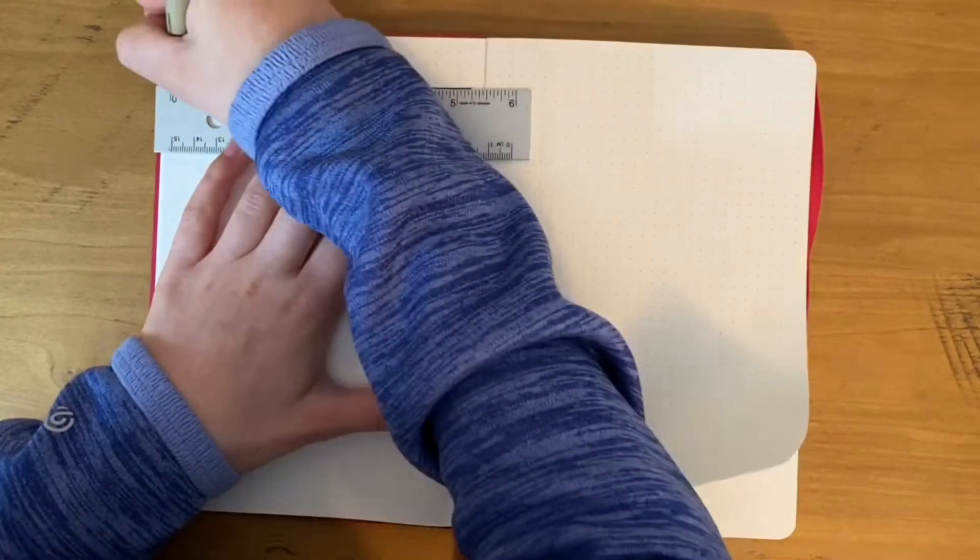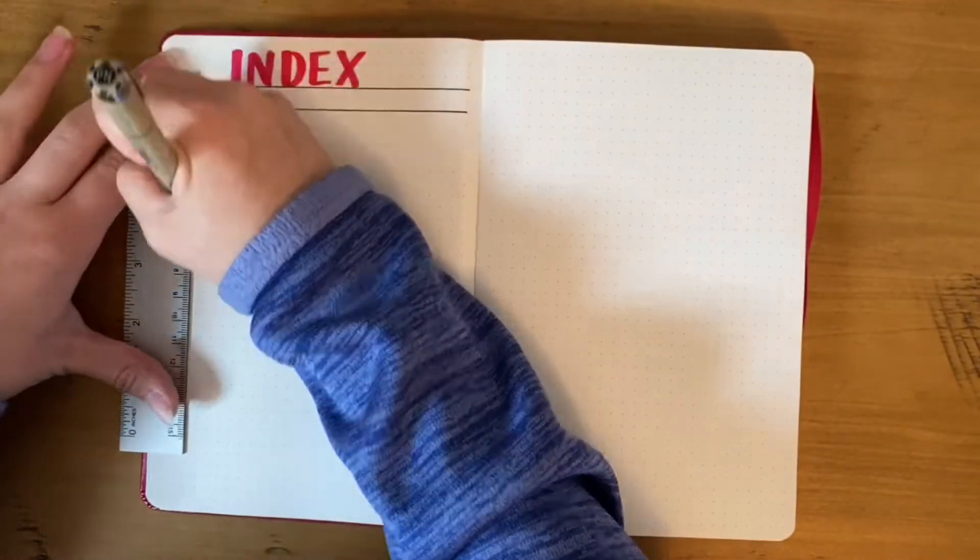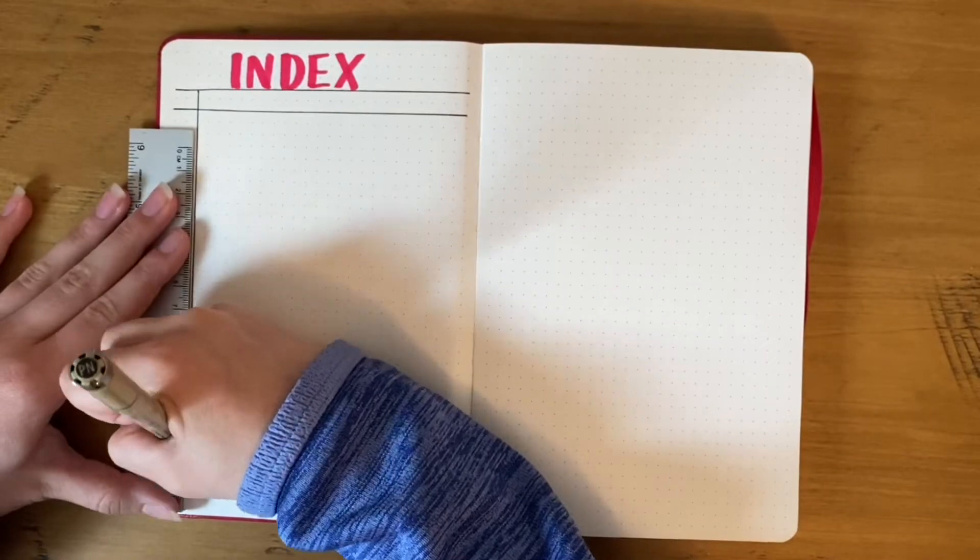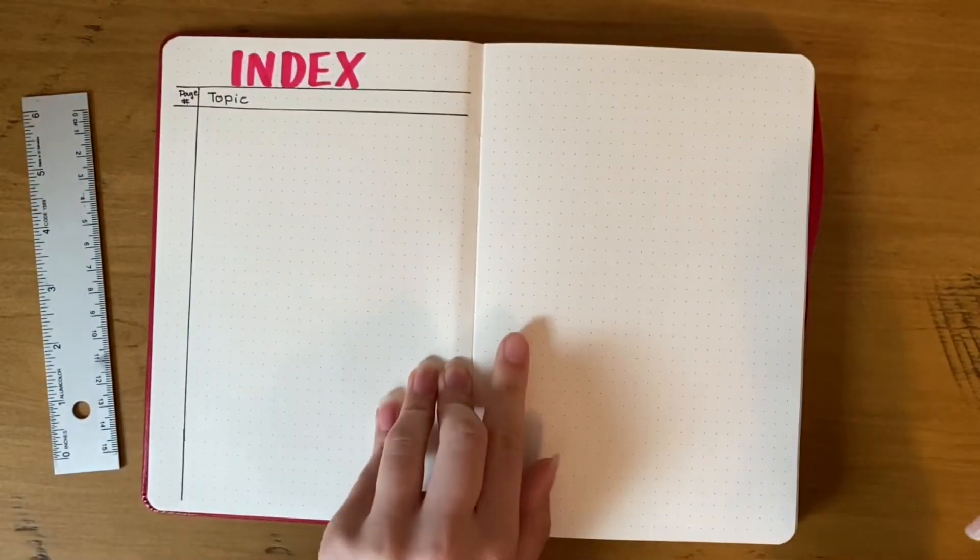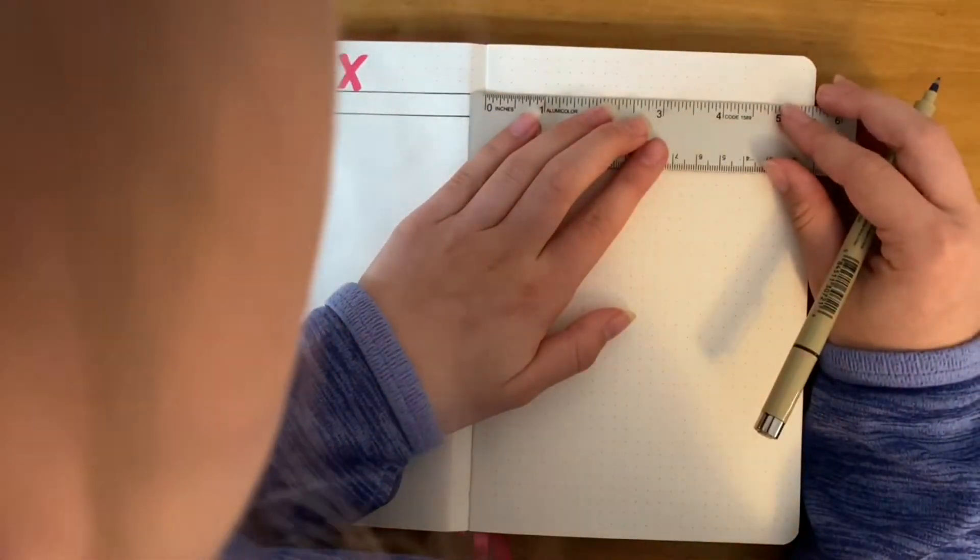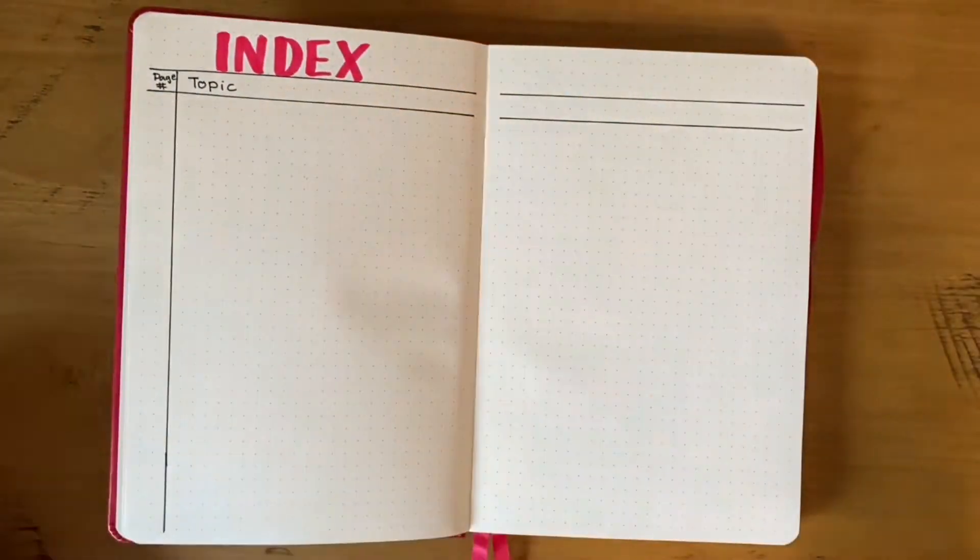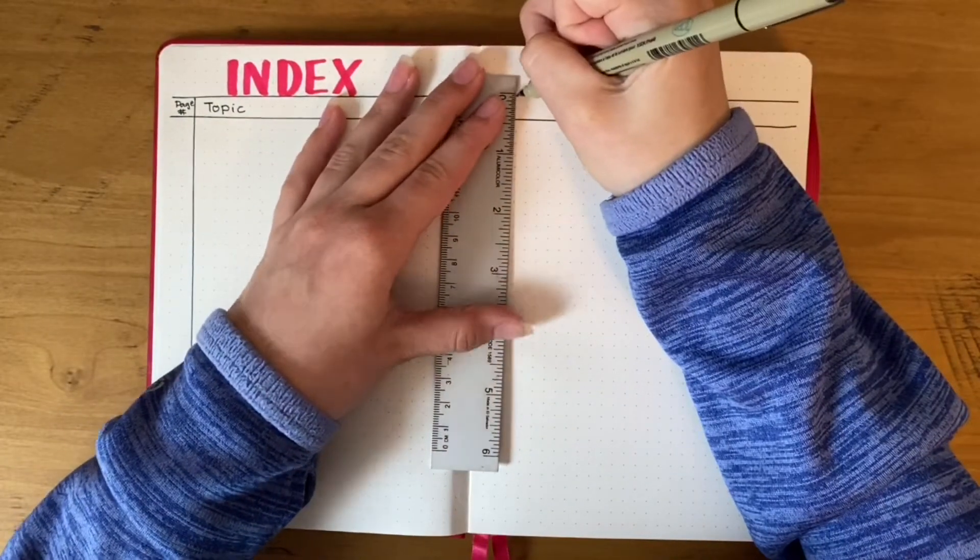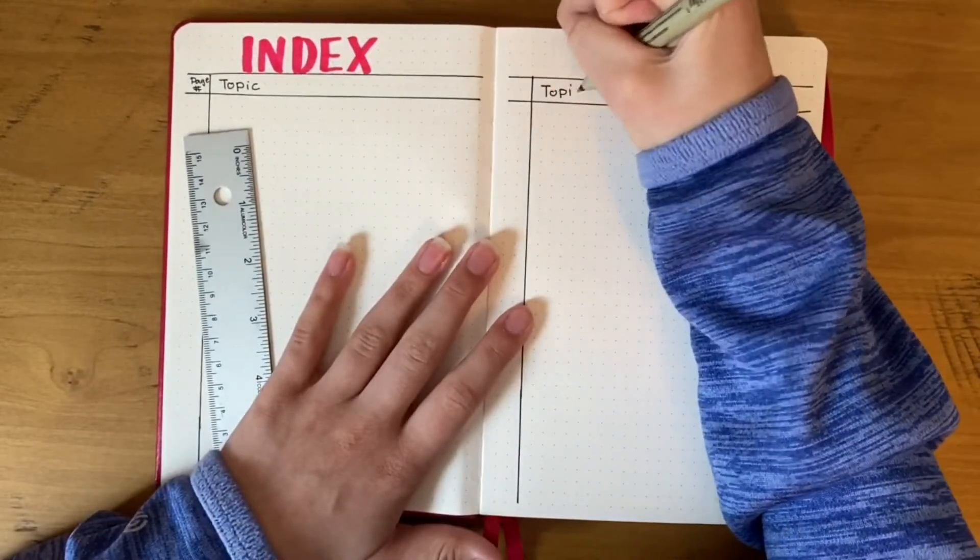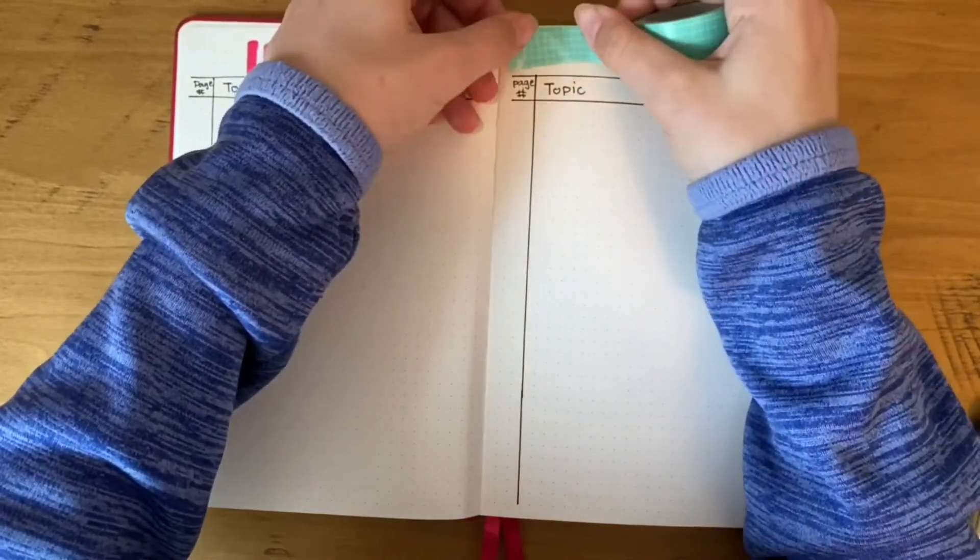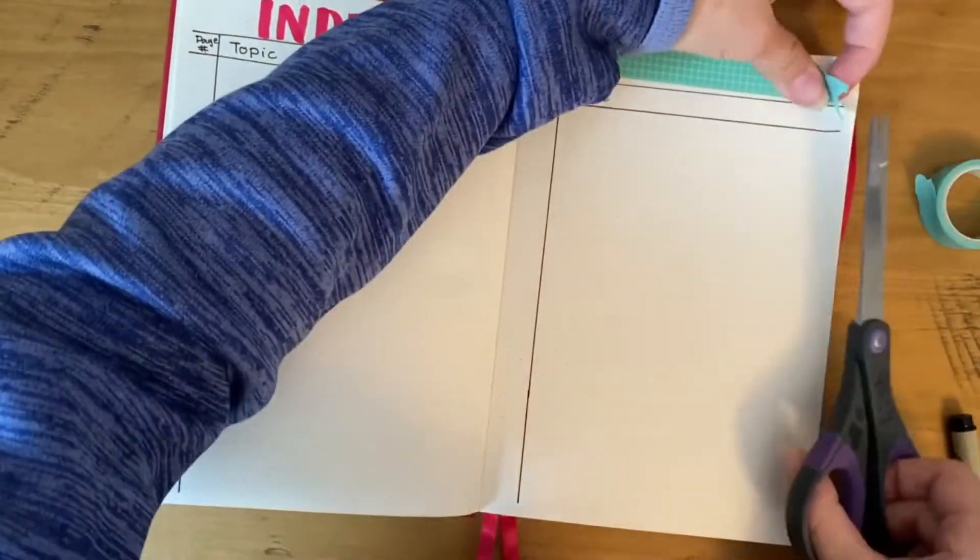It's a pretty simple one. I didn't make it very fancy because I didn't think it was a very important spread for me. I set it up with the topic of the page or pages, and then the page numbers. At the end of this video, I went back and put all these spreads into the index, which helped.